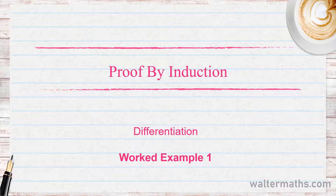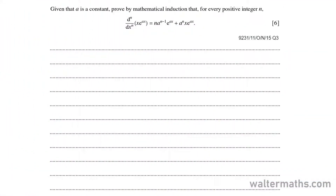We're still on the topic proof by induction, and in this video we are going to be looking at problems involving differentiation. Given that a is a constant, prove by mathematical induction that for every positive integer n, d to the n by dx to the n of xe to the ax is equal to n of a to the power of n minus 1 of e to the power of ax plus a to the power of n of x of e to the power of ax.